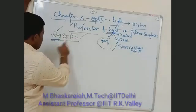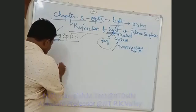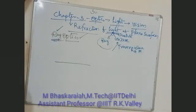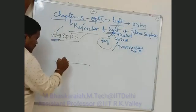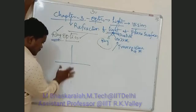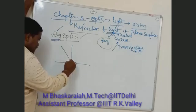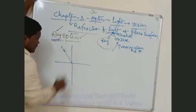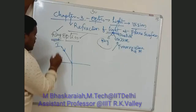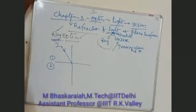Consider a ray of light incident on a surface. We have two media with a boundary between them. There is a normal to that boundary. The light is incident from one medium to another — this is medium one and medium two.